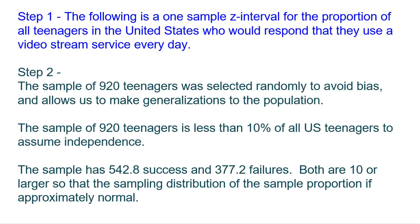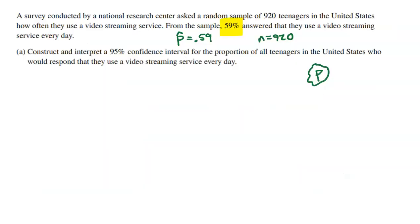The first two steps involve a lot of writing. Step one: we are going to use a one-sample Z interval for the proportion of all teenagers in the United States who would respond that they use a video streaming service every day. Anytime you are looking for a population proportion utilizing a sample proportion, that is called a one-sample Z interval. Don't shortcut the context description — that was literally in the question. Just copy it. It's really that simple.